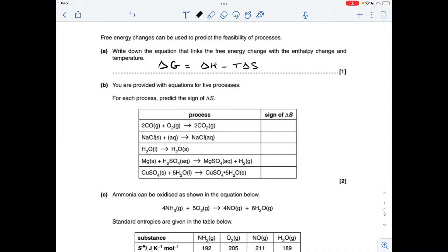Part B, we've got to predict the sign of the entropy change for each of these processes. So the first one, we're going from 3 moles of gas down to 2, so that's a negative entropy change, minus sign there.